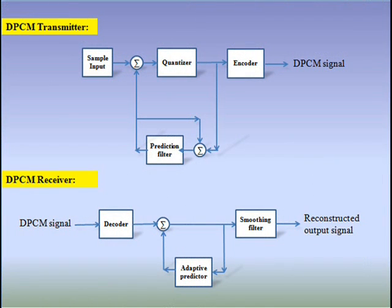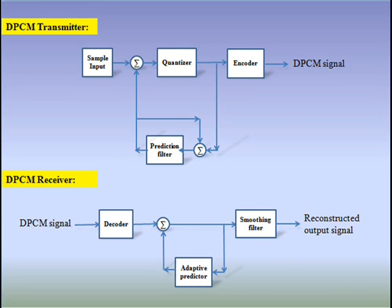Differential pulse code modulation, DPCM, is a signal encoder that uses the baseline of pulse code modulation but adds functionality based on the prediction of future values of the signal. Instead of taking a difference relative to the previous input sample, a difference relative to the output of a local model of the decoder process is taken. In this option, the difference can be quantized, securing a good way to incorporate controlled loss in the encoding. Thus, the DPCM system reduces the quantization error generated at the transmitter of the PCM system.